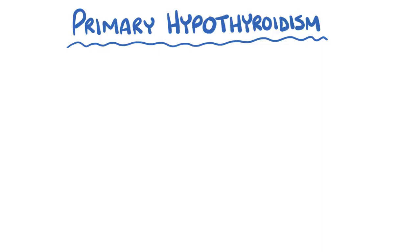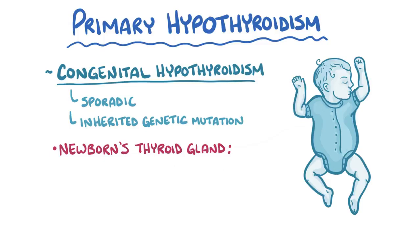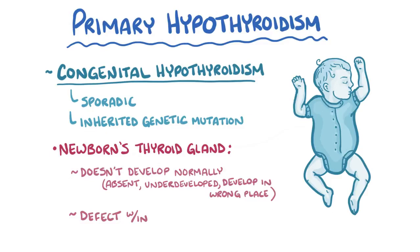Another type of primary hypothyroidism is congenital hypothyroidism, which affects newborns. Most of the time this is sporadic, meaning it happens at random, but it can also be caused by an inherited genetic mutation. The newborn's thyroid gland doesn't make enough thyroid hormones either because it doesn't develop normally — the gland could be absent, underdeveloped, or in the wrong place — or because there's a defect within a normal-looking thyroid gland that affects its ability to make thyroid hormones.